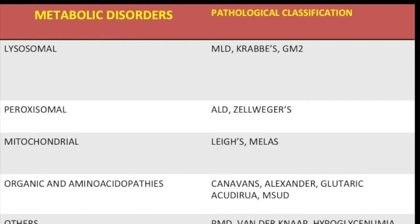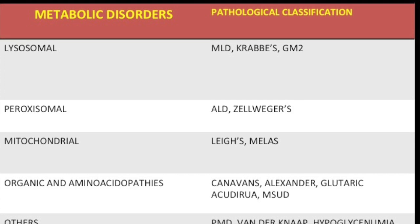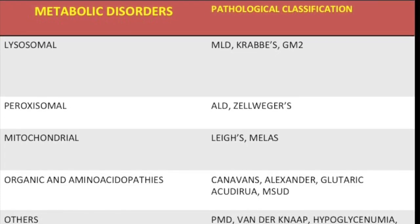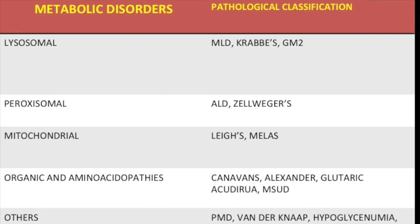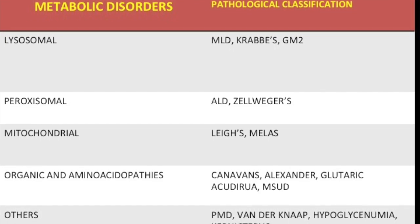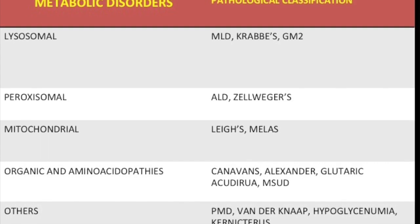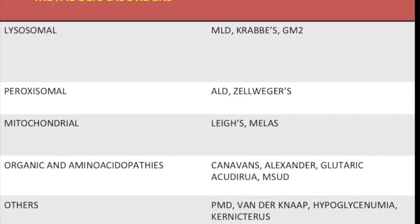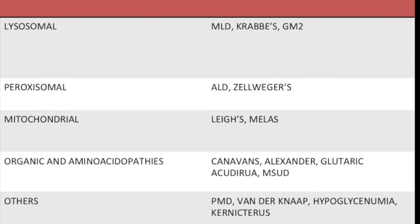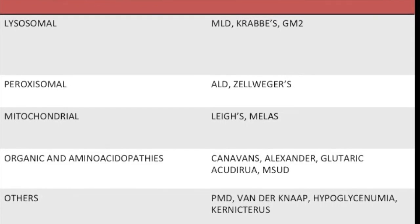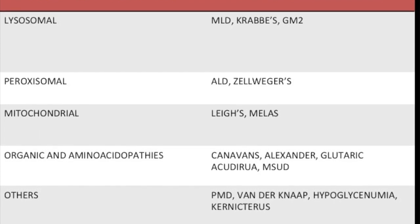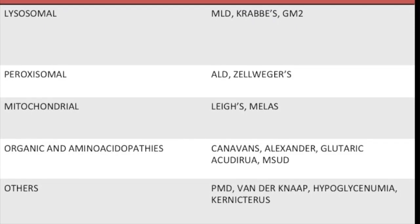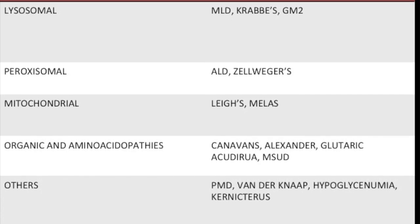The pathological classification of genetic white matter disorders in children is based on which organelle in the brain cell is damaged or faulty. Faulty lysosomes are associated with metachromatic leukodystrophy, Krabbe's disease, mucopolysaccharidosis, and GM2 axonopathies. Peroxisomes are abnormal in adrenoleukodystrophy and Zellweger syndrome. Mitochondria are damaged or faulty in MELAS, MERRF, Leigh syndrome, and some of the glutaric acidurias.